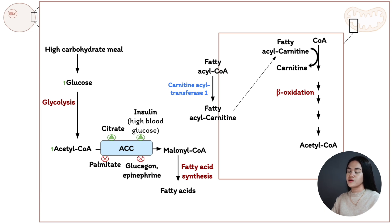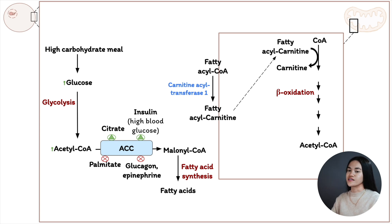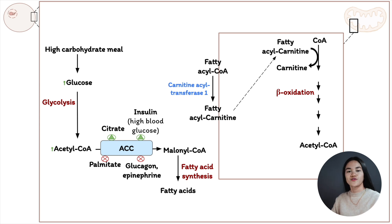The hormones glucagon and epinephrine inactivate fatty acid synthesis because glucagon is secreted when glucose is low — so we don't need to make fatty acids; we need to produce energy. When blood glucose levels are lower, we activate pathways that produce energy and deactivate pathways that store energy. That is the regulation of fatty acid synthesis.